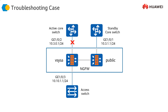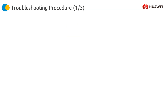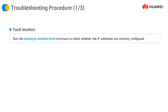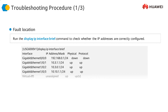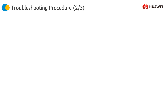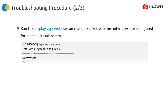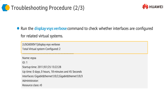First, we can run display IP interface brief and we can see that all the interfaces are up, so there is no issue with interfaces being up or down.